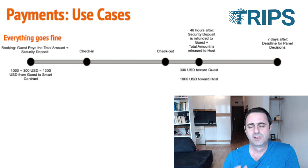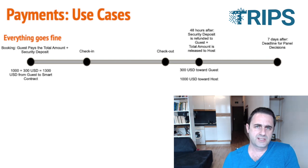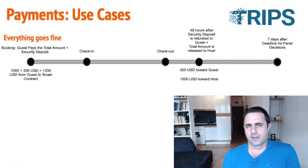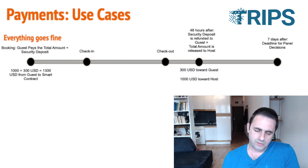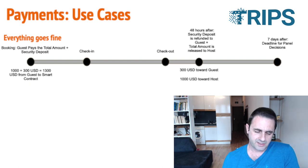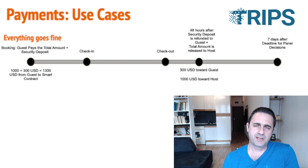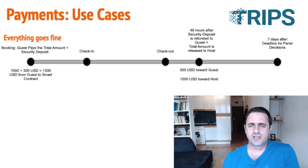In the first case, everything goes fine. The guest makes a booking and pays a thousand dollars for the stay and three hundred dollars as a security deposit. These numbers are random — there could be different amounts. The money is paid, goes to the smart contract, and sits there waiting for a date or an instruction.